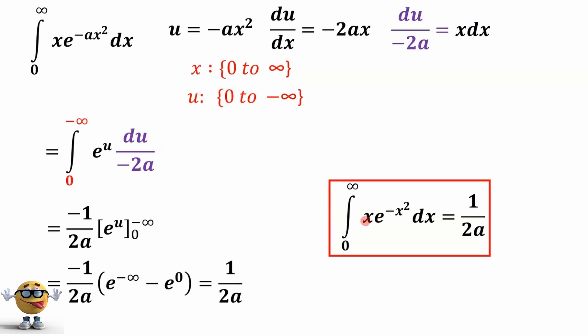And that's our integral. The integral of x times e to the negative x squared from 0 to infinity is 1 over 2a.